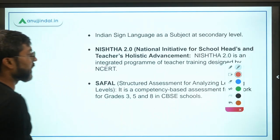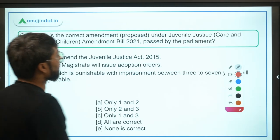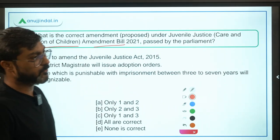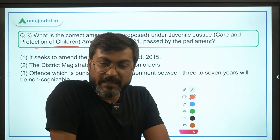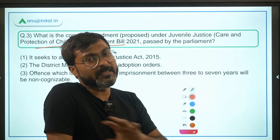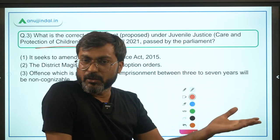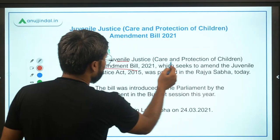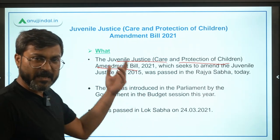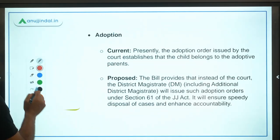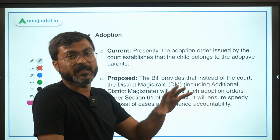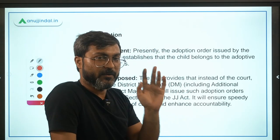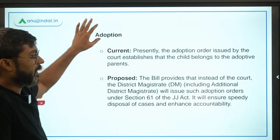Now let's talk about question number three: what is the correct amendment proposed under the Juvenile Justice (Care and Protection of Children) Amendment Bill 2021 passed by Parliament? The Juvenile Justice Act was originally passed in 2015. This amendment bill has now been passed by Parliament and has gone for the President's assent. One important amendment is regarding adoption.